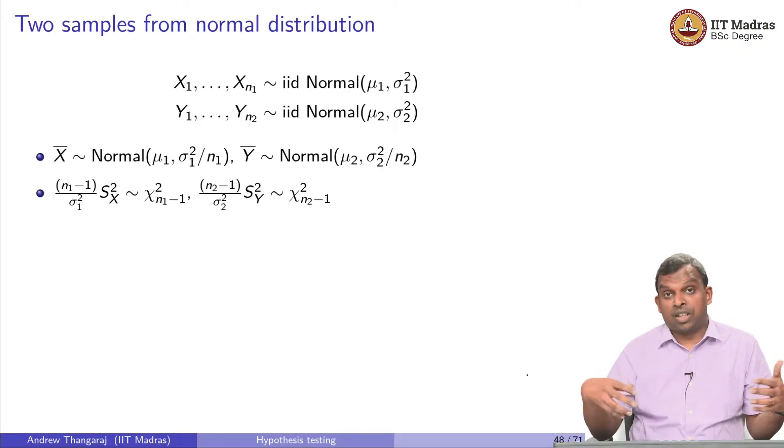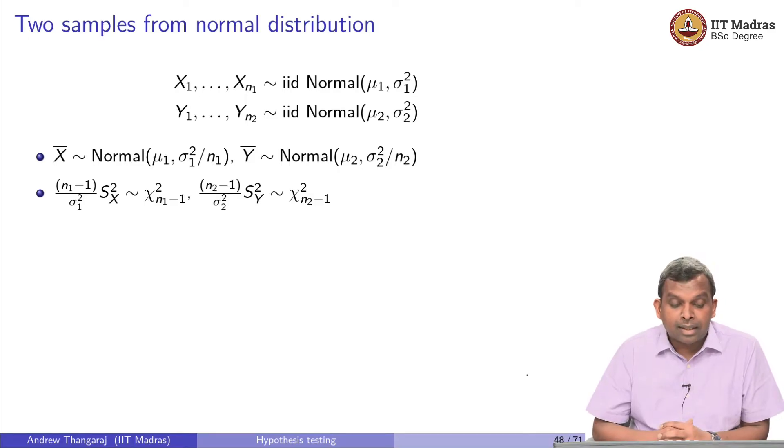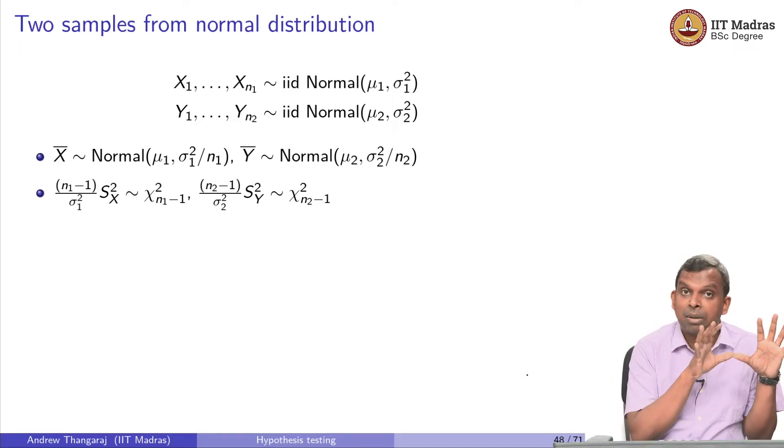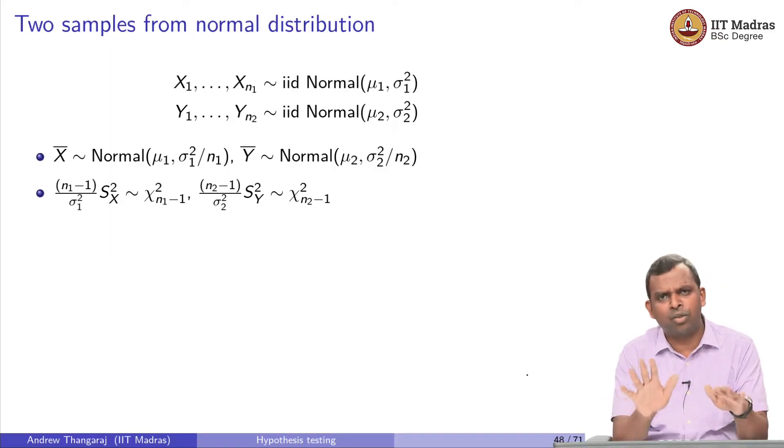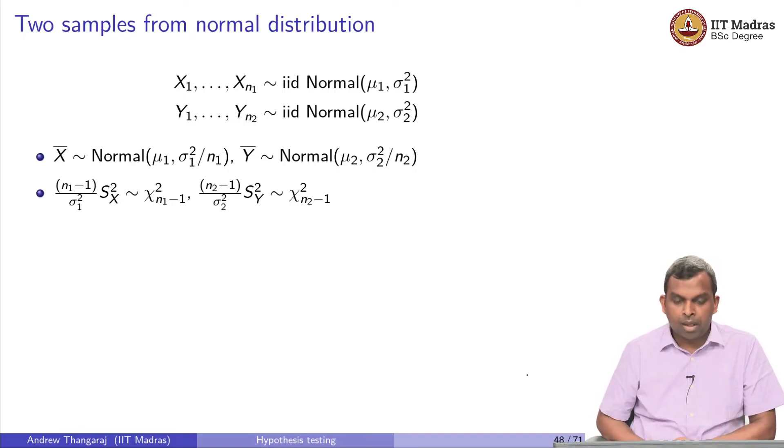What are the various distributions now when you have two samples? The sample mean of X will have normal with mean μ1 and variance σ1²/N1. The sample mean of Y will also have normal distribution with mean μ2 and variance σ2²/N2. There are similar results for sample variance of X and sample variance of Y. These two are not surprising at all. We already saw it separately for each of the samples, same thing I am repeating.